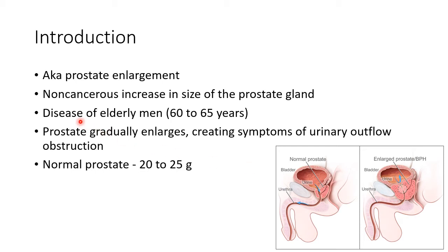BPH is basically a disease of elderly men. It usually affects men between 60 to 65 years of age. In BPH, the prostate gradually enlarges, creating symptoms of urinary outflow obstruction. The weight of a normal prostate is between 20 to 25 grams.